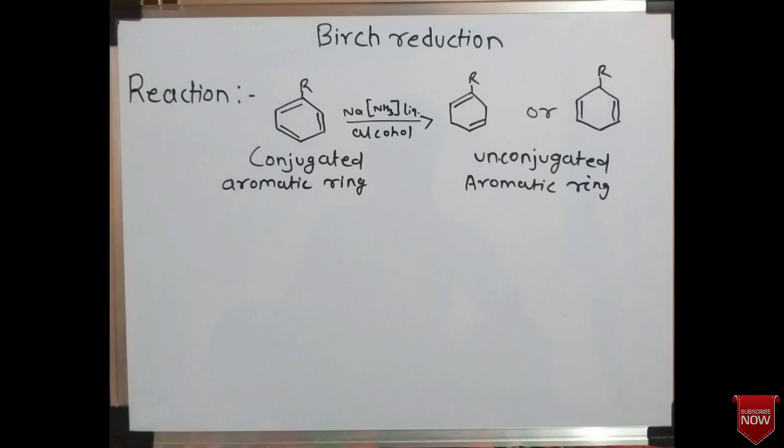We know what a conjugated or unconjugated aromatic ring is. In the conjugated aromatic ring, conjugation means the presence of alternate pi bonds, or double bonds, inside the ring. In the conjugated ring there are three pi bonds, while in the unconjugated aromatic ring there are only two pi bonds — alternate pi bonds are not present inside the ring. That is why it is known as the unconjugated aromatic ring.